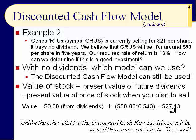We go to the table at 13 percent and down five years — the present value multiplier is 0.543. We multiply $50 times 0.543 and find that the stock today is worth $27.13 according to our estimates.